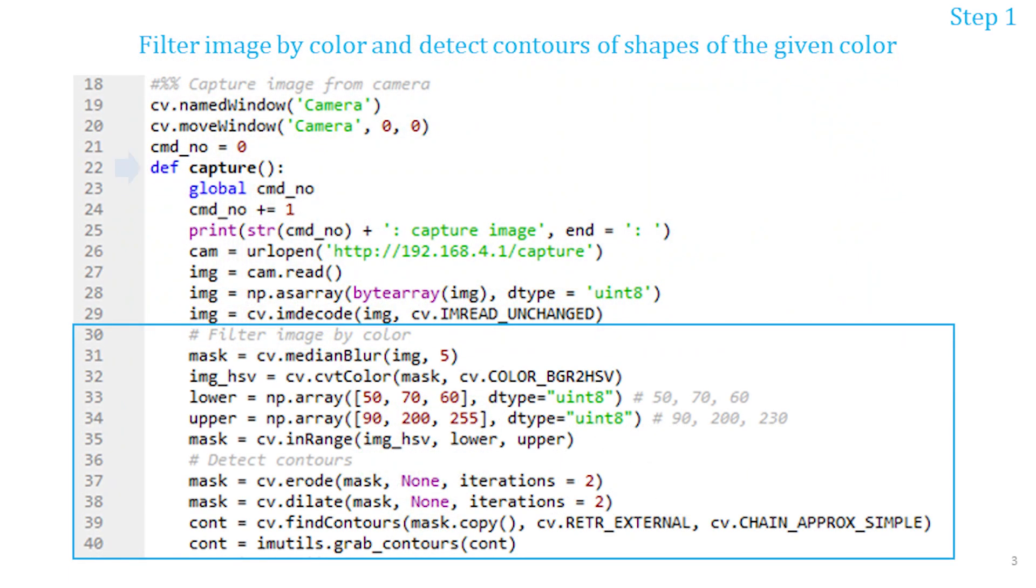I will modify the function capture that I created in the second episode of the series to implement the ball detection. First I will blur the image captured by the camera to reduce noise. Then I will convert the image into the HSV color space and apply the HSV color filter to create a mask that keeps only the shapes of the ball's color. Then I will reduce the white noise and smooth the edges of the shapes by applying erosion twice and then dilation twice.